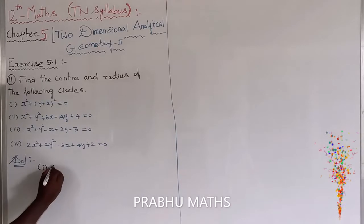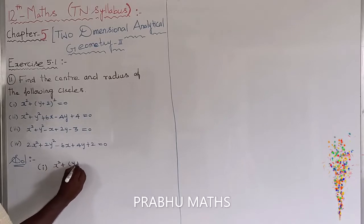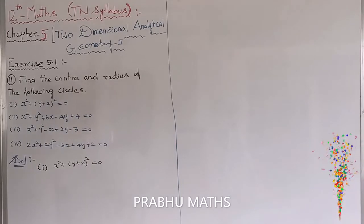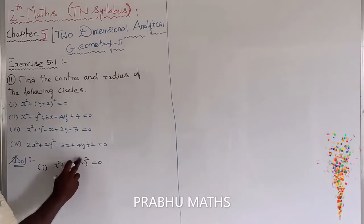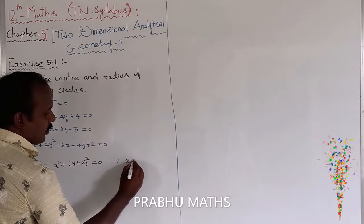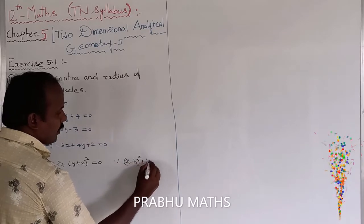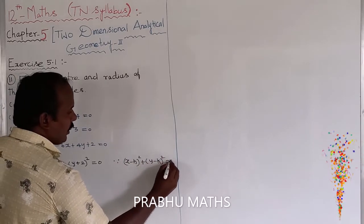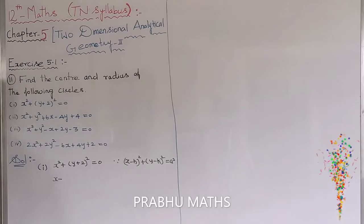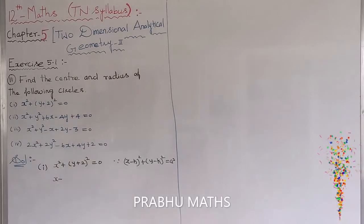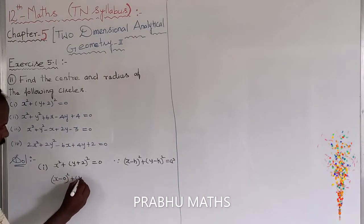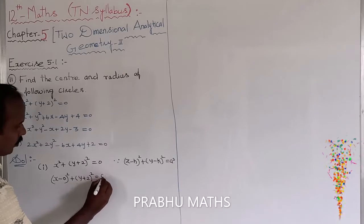First subdivision: x² + (y + 2)² = 0. This is converted to the standard form x minus h, the whole square, plus y minus k, the whole square, equals r squared. So this becomes x minus 0, the whole square, plus y plus 2, the whole square, equals 0.